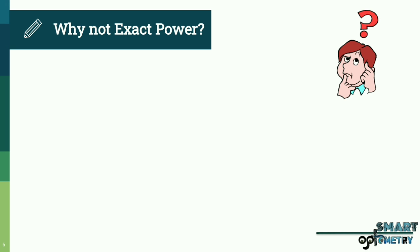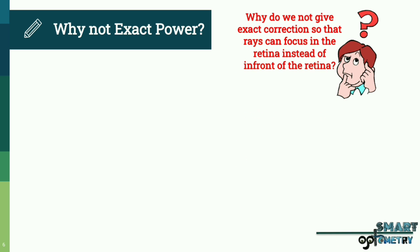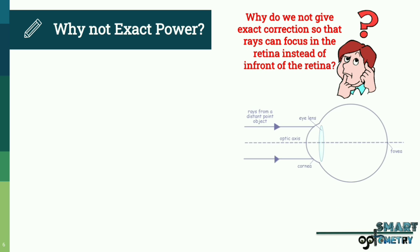One more question arises: our accommodation gets stimulated and the posterior segment elongates when light rays focus behind the retina. Then why do we not give the exact power so that the rays can focus on the retina instead of in front of it?